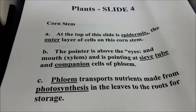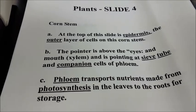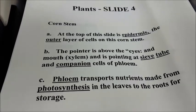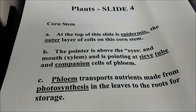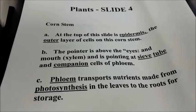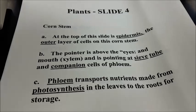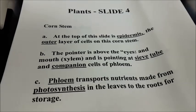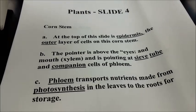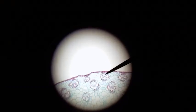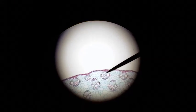The pointer is above the eyes and mouth and is pointing at sieve tube and companion cells of phloem. Phloem transports nutrients made from photosynthesis in the leaves to the roots for storage, and also to any other growing parts that need nutrition — this could be a leaf or a rootlet. At the very top above the eyes is phloem.